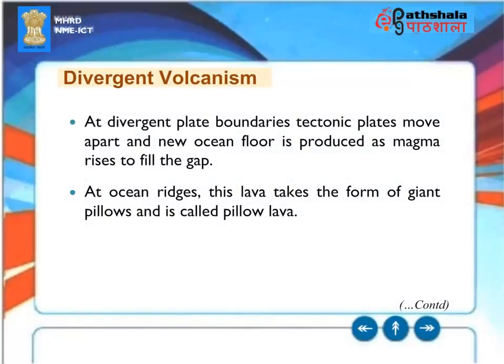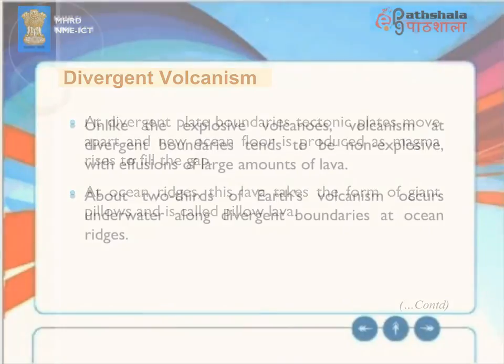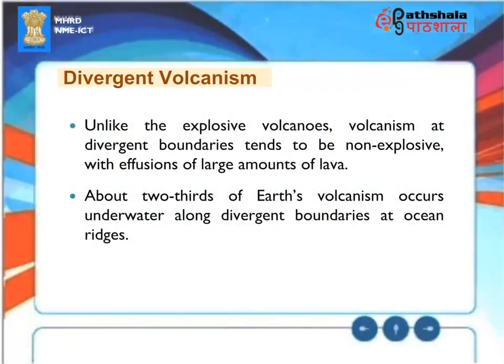At divergent plate boundaries, tectonic plates move apart and new ocean floor is produced as magma rises to fill the gap. At ocean ridges, this lava takes the form of giant pillows called pillow lava. Unlike the explosive volcanoes at convergent boundaries, volcanism at divergent boundaries tends to be non-explosive, with effusions of large amounts of lava. About two-thirds of Earth's volcanism occurs underwater along divergent boundaries at ocean ridges.